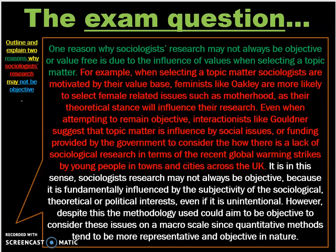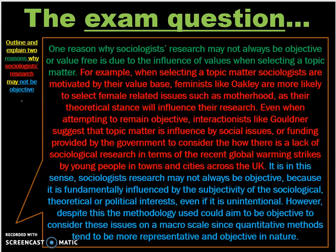She draws upon a contemporary issue at the time — global warming — remembering this is from the 2019 paper. If writing in 2020–2021, she may have referenced the increase in sociological research into the effects of COVID. The student then makes a specific reference to why research is not always objective: it is fundamentally influenced by the subjectivity of the sociological, theoretical or political interests of those doing the research. She adds analysis by suggesting a lack of objectivity may be unintentional, and also that the methodology used could be objective to overcome some of the issues of bias.